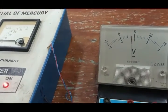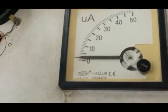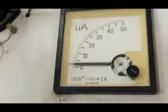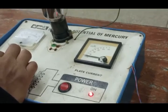The standard value of ionization potential of mercury is around 10. So close to 10 volts the current is increasing more with increase in voltage.